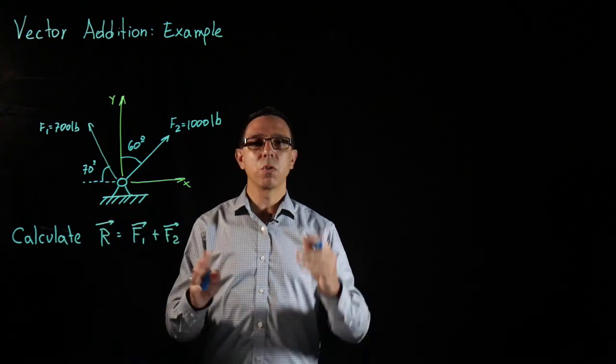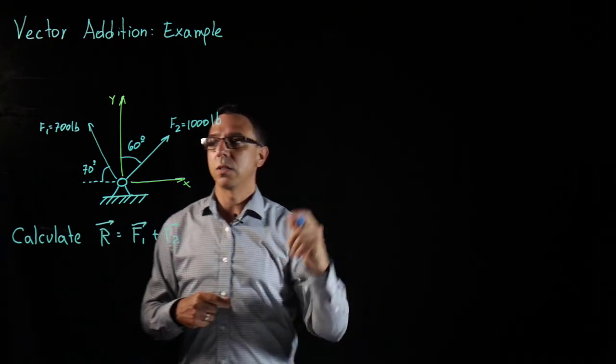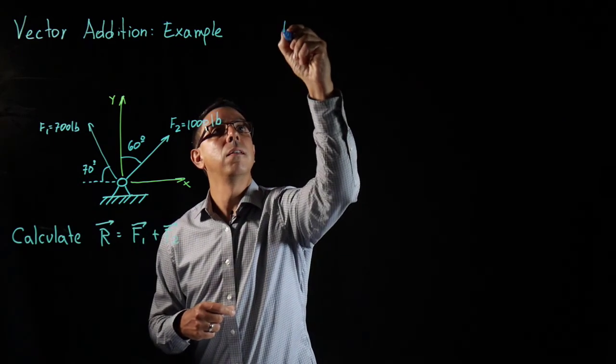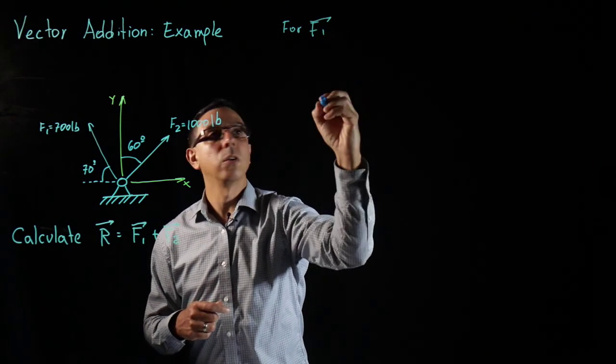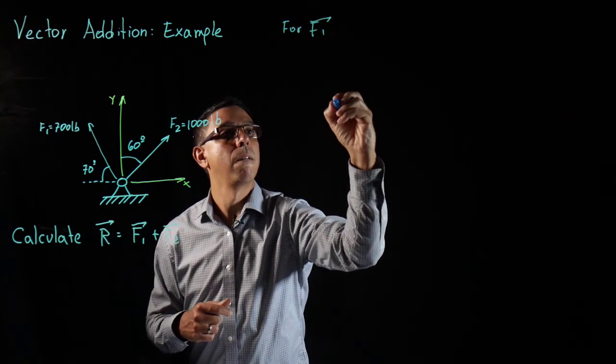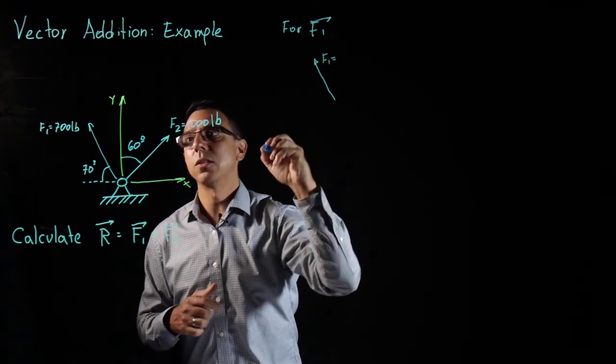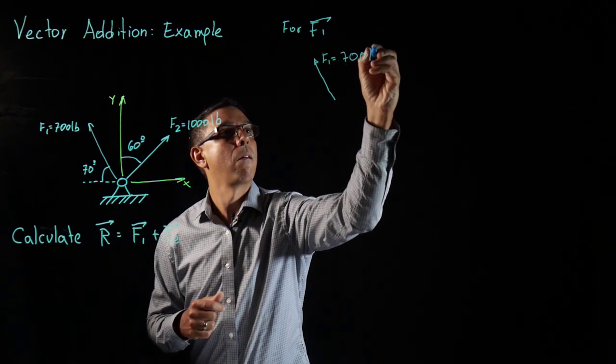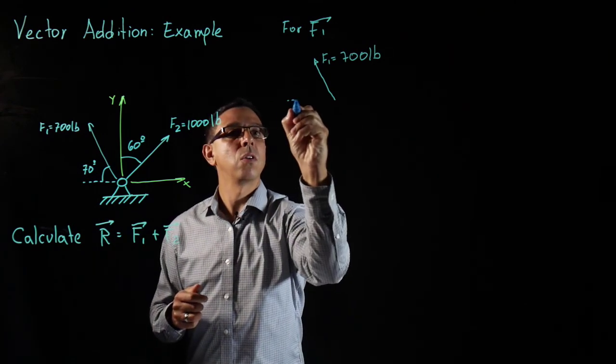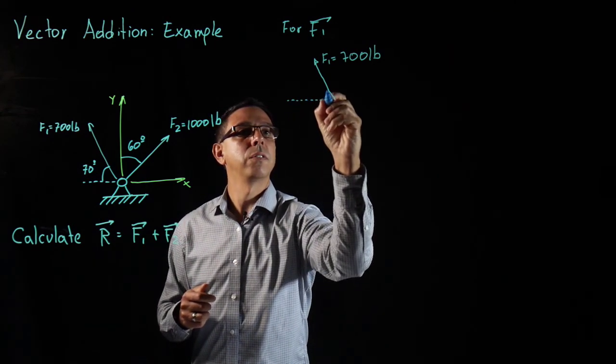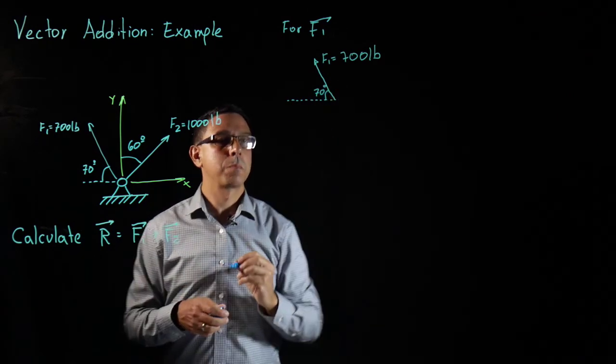Let's take this F1 and what I'm going to do is draw F1 and the components of F1 in Cartesian vector form. So for F1 we have the following. This is F1. We know the magnitude is 700 pounds. And we also know the angle that this creates with the horizontal. So this over here is going to be 70 degrees.